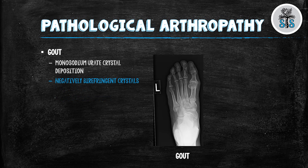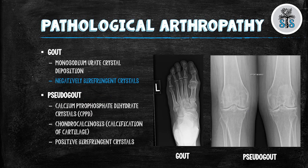Gout and pseudogout: Gout involves monosodium urate crystal deposition and negatively birefringent crystals. It's a common chief complaint where you'll need to rule out gout versus septic arthritis. Gout will appear as a yellow, cloudy aspiration with more than 50,000 white blood cell count, but the differentiating factor is the monosodium urate crystal deposition. Pseudogout involves calcium pyrophosphate dihydrate crystals. You may see chondrocalcinosis, as seen in the radiograph on the right in the lateral compartment, and these will have positive birefringent crystals.